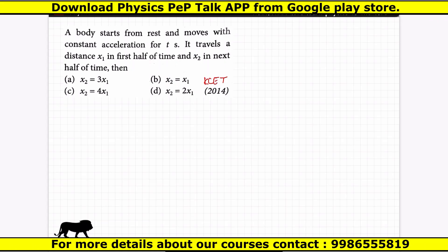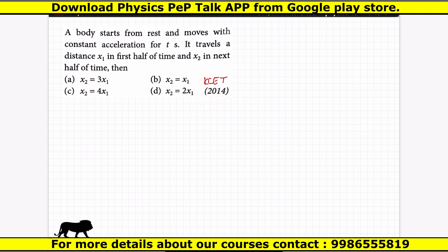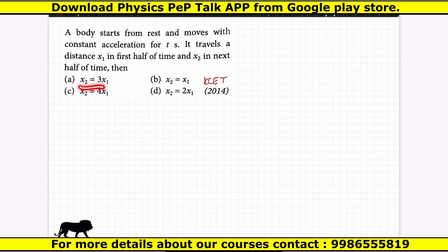This question is from CET 2014. A body starts from rest and moves with constant acceleration for T seconds. It travels distance x1 in the first half of time and x2 in the next half of time. Then how is x1 related to x2? This is the type of problem.